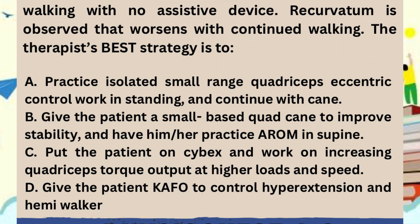Option A: perform eccentric contractions of the quadriceps muscle with the patient in standing position and continue patient walking with a straight cane. Option B: give the patient a quad cane and also perform supine lying active range of motion exercises for the quadriceps. Option C: give isokinetic exercises using a Cybex machine to improve torque of the quadriceps muscle. Option D: give the patient a KAFO and also a hemi walker so that the genu recurvatum can be resolved.